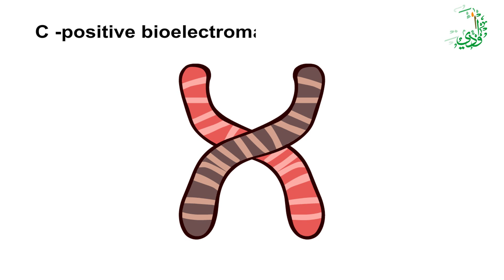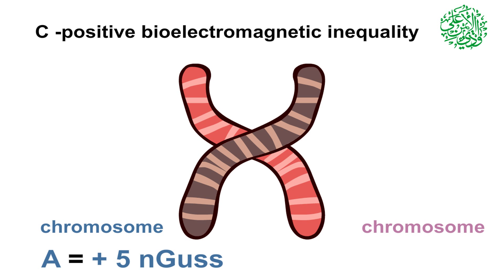Positive bioelectromagnetic potential difference. In this form of inequity, if chromosome A1 has plus five nanogausse electromagnetic charge, chromosome B1 will have less than minus five nanogausse.